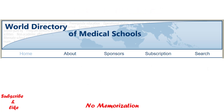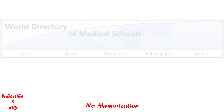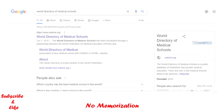If you are planning admission in a medical school — maybe in your home country or any other country — I would highly encourage you to check the World Directory of Medical Schools. If you see the name of that medical school in the list, that means you can get admitted. But if not, I would say think twice before taking admission.